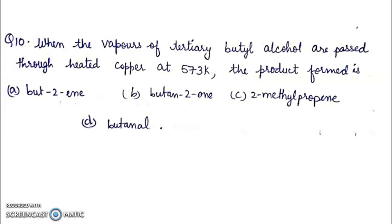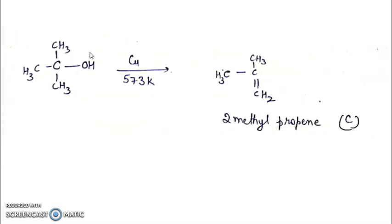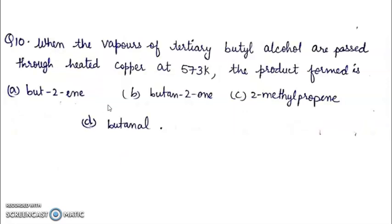Question 10: When the vapors of tertiary butyl alcohol are passed through heated copper at 573 Kelvin, the product formed is: But-2-ene, but-2-one, 2-methylpropene, or but-2-enol. This is the tertiary alcohol. When it reacts with copper, OH and one H will be removed and a double bond will form. So answer will be 2-methylpropene. Thank you.